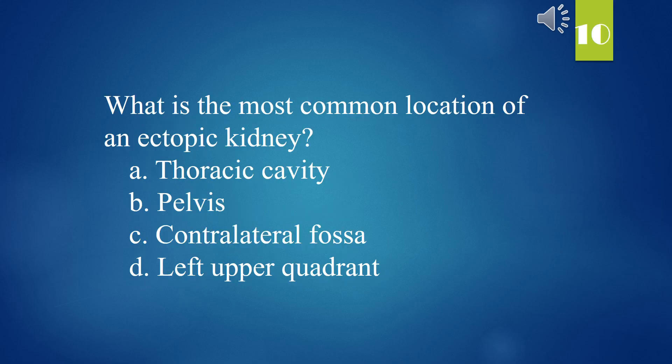What is the most common location of an ectopic kidney? A. Thoracic cavity. B. Pelvis. C. Contralateral fossa. D. Left upper quadrant. The answer is B. Pelvis.